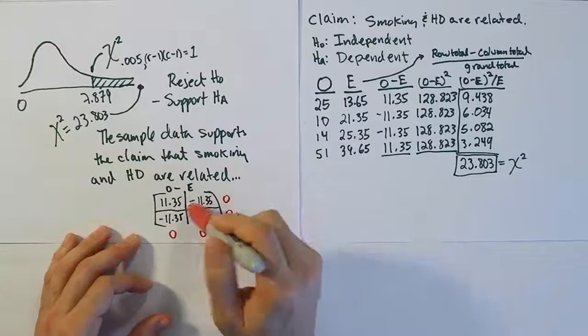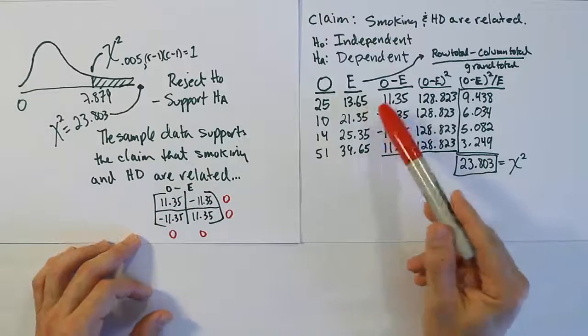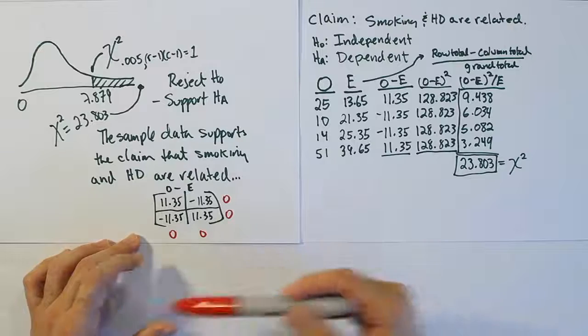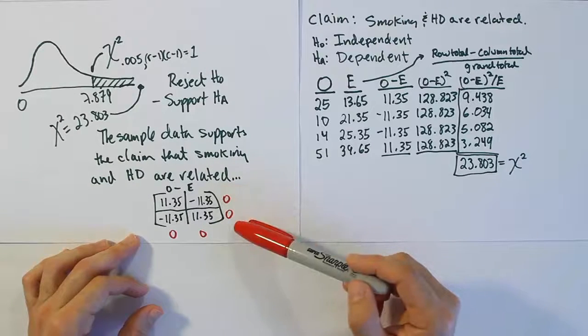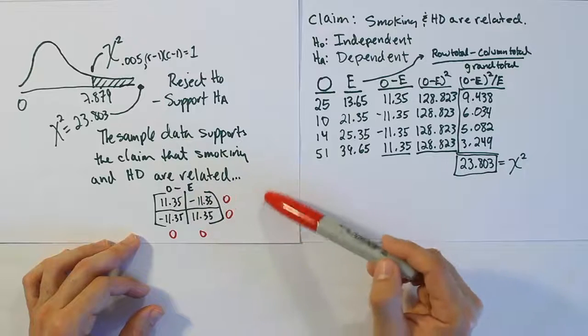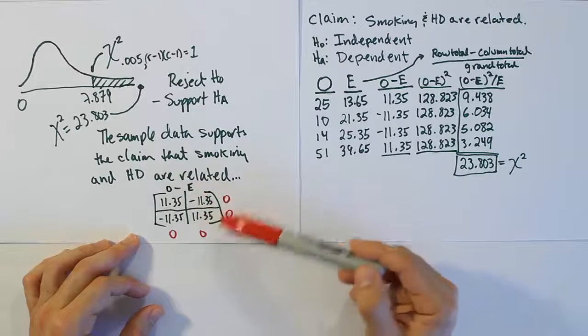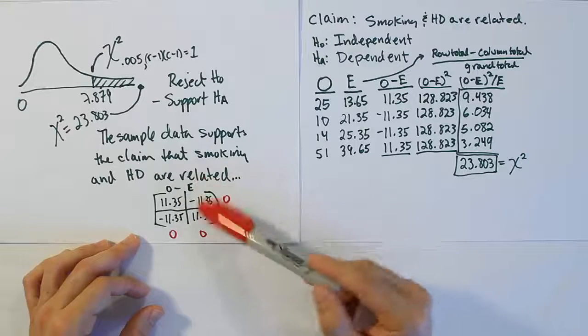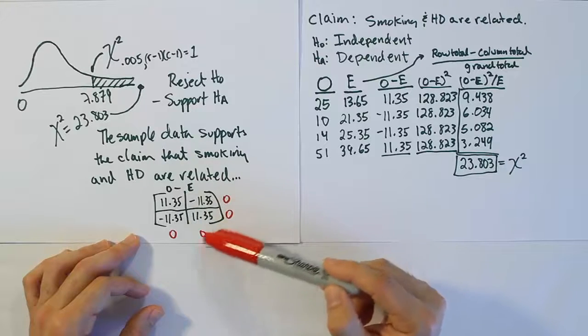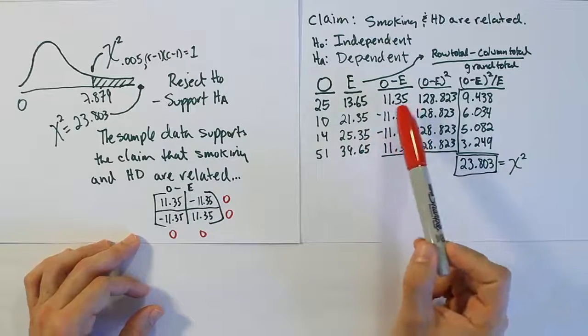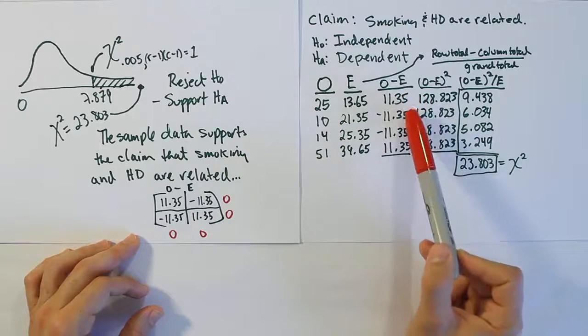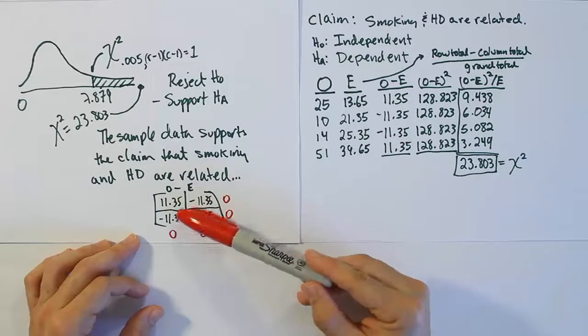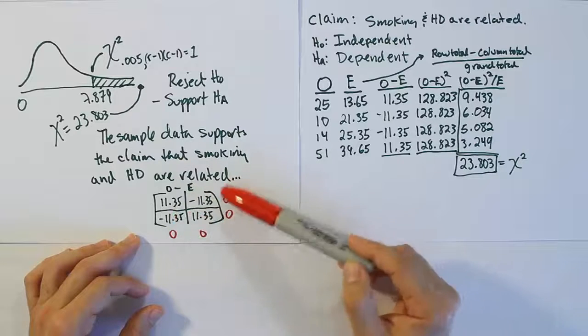When I was doing these problems, all our examples were these two by two problems because they are reasonable to do by hand and don't take forever. If you have more cells, it takes longer. But if you had, say, a three by three, you would see the same pattern that all three of the cells add up to zero, both going down and across. Even if it was a three by three table or even a two by three table, it always has this pattern. The key thing is that a pattern must always be there or you've made a mistake.